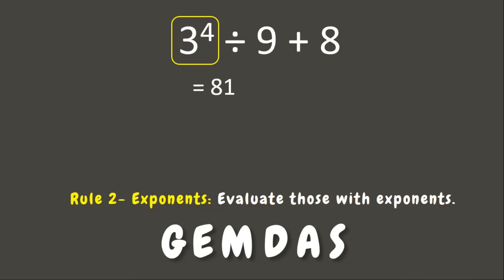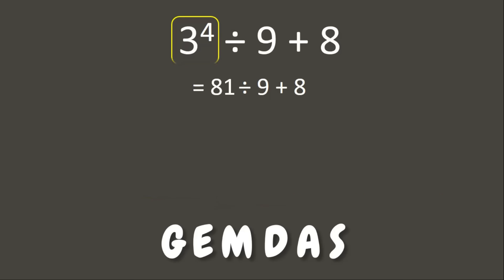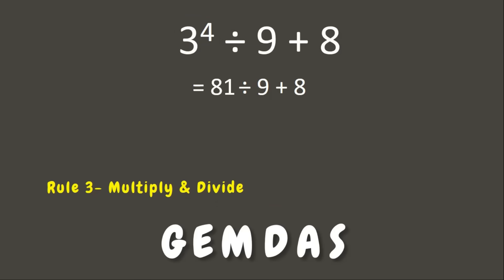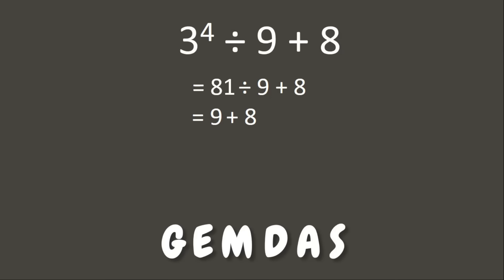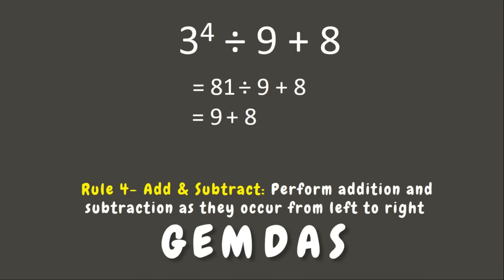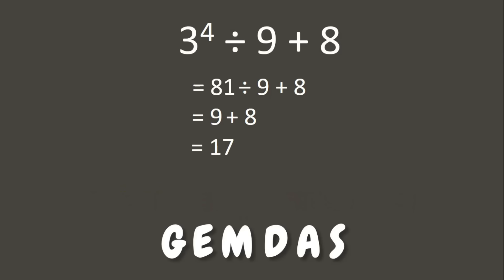Now let's proceed to Multiplication and Division. We only have division here: 81 divided by 9. So let us divide — 81 divided by 9 is 9. Now let's go to our final operation. We have addition: 9 plus 8 is 17. Since there's no more operation to solve, 17 is our final answer.